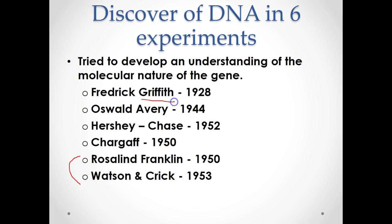We're going to start with Griffith. In 1928, Griffith determined through various experiments that there was a factor passed on between bacteria and a host cell that caused bacteria to be either harmless or harmful. We call harmful bacteria pathogenic — a pathogen is a disease-causing agent. He used two strains of bacteria: one known to be harmful and one known to be harmless, and over the course of several years, he determined there was something in the bacteria that allowed them to be harmful or harmless.